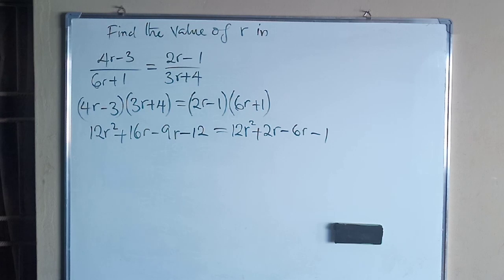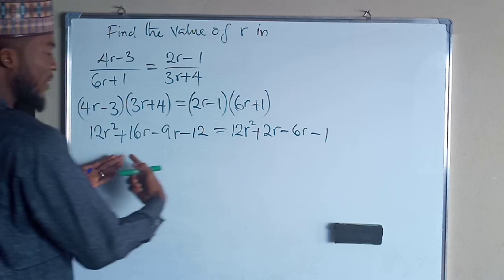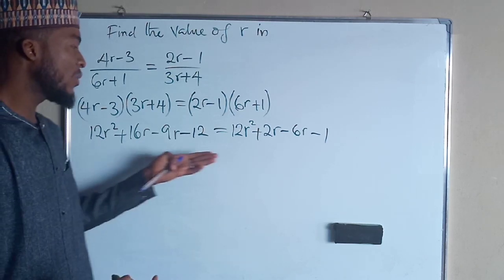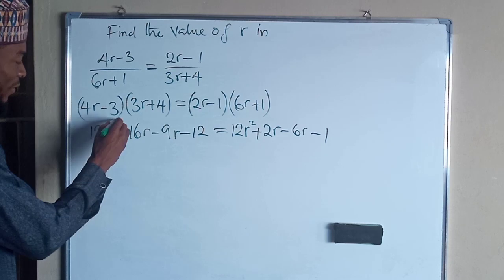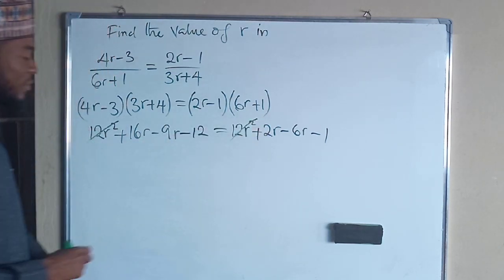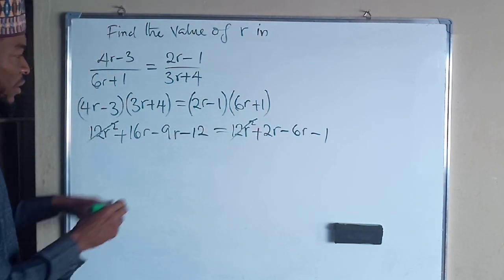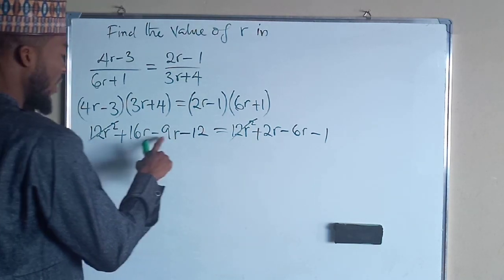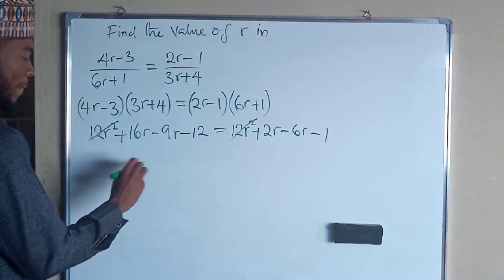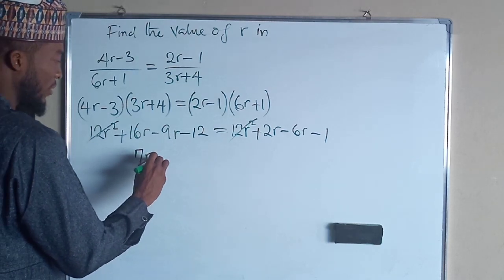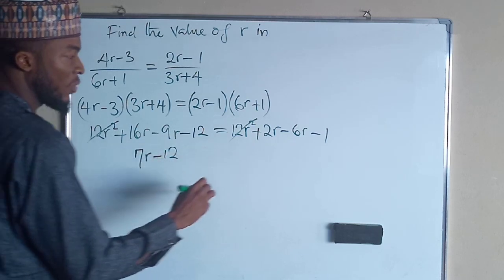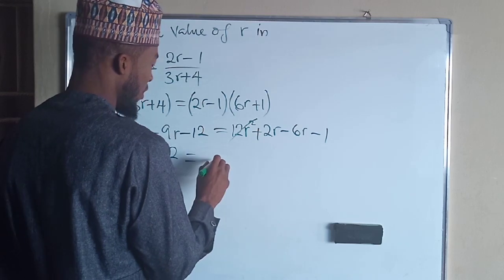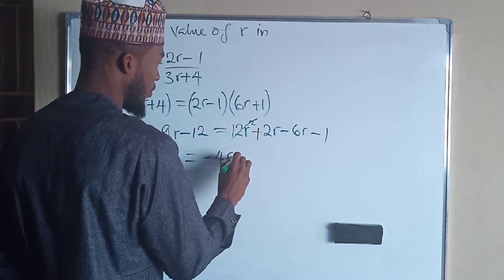Now by collecting like terms, you see whatever you have here on the left-hand side is definitely going to give us the right-hand side. Therefore, this one cancels this. This and this are like terms. So this minus this is going to give us 7R - 12, while here this minus this is going to give us negative 4R - 1.